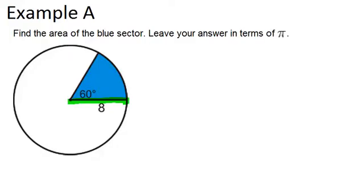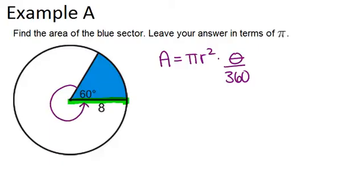So, in order to find the area of the sector, we're going to find the area of the whole circle, pi r squared, and multiply by the fraction of the circle that the sector is, which we can figure out by doing the angle that's given divided by 360, which is how many degrees are in a whole circle.